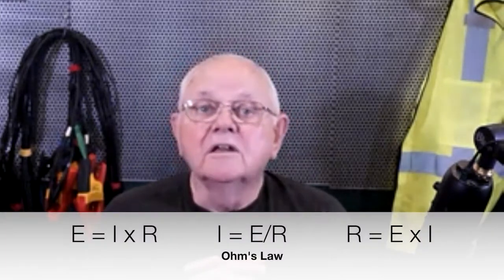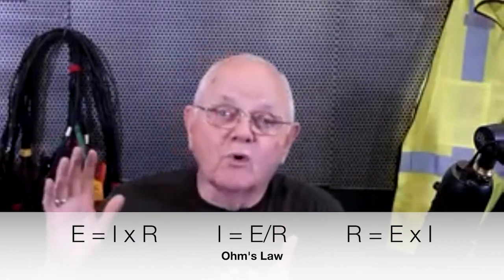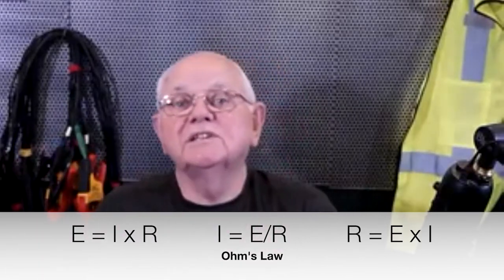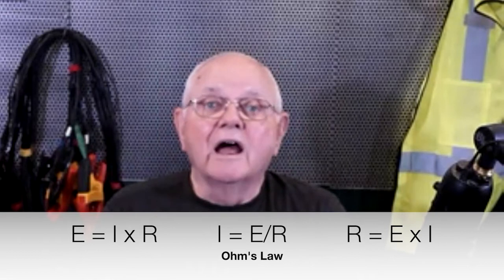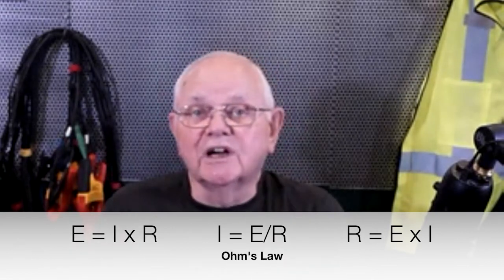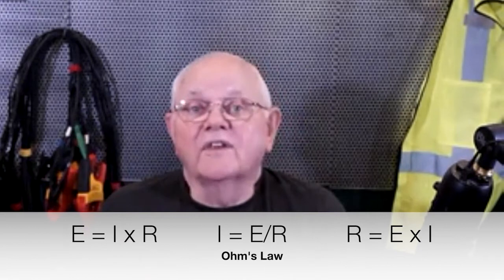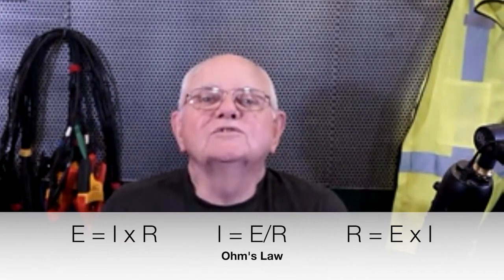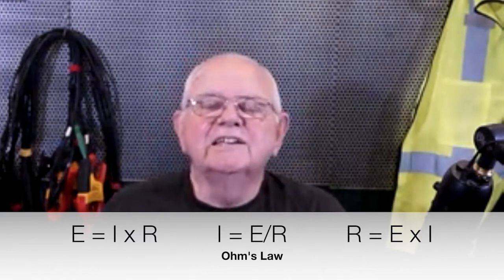Basic electricity — we have an electrical pressure that forces current to flow down a conductor. This electrical pressure, electromotive force, we call it voltage. If we increase the voltage, we can force more volume of electricity down a given conductor. Now I have some resistance in this conductor. Everything that current flows through — unless it's a superconductor — is going to have some resistance, some opposition to current flow.